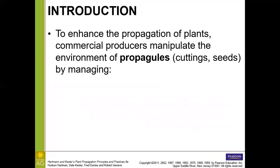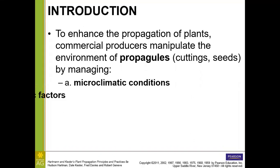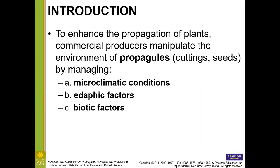We call the material that we're propagating the propagules. This could either be our tiny cuttings or the seeds themselves. We're going to manage the microclimates, the edaphic factors, which are going to be the structure and composition of either soil or media. This could be potting soil, mineral soil, or things like our rock wool and peat. And then biotic factors as well, concerning pests and pathogens in particular.